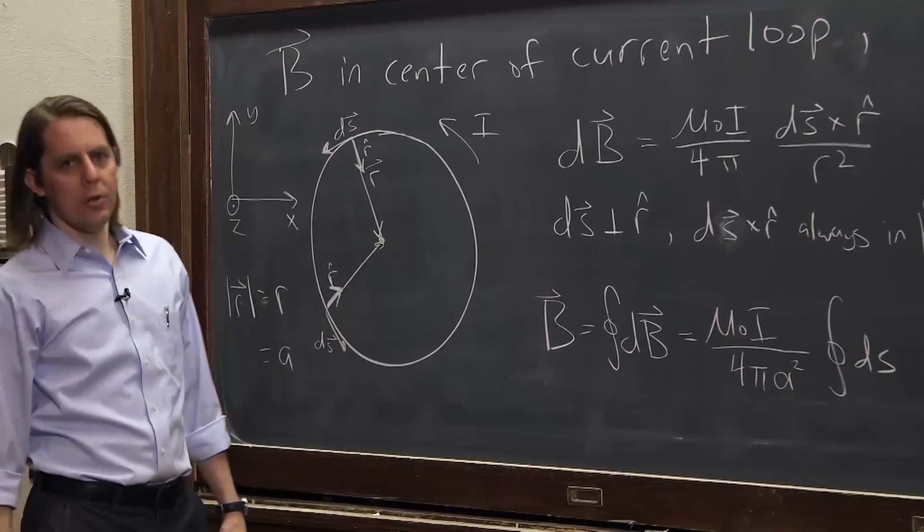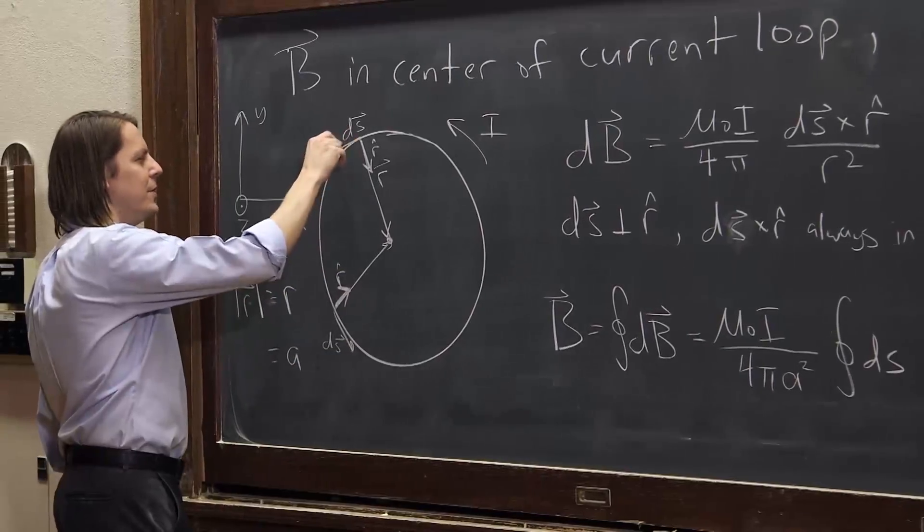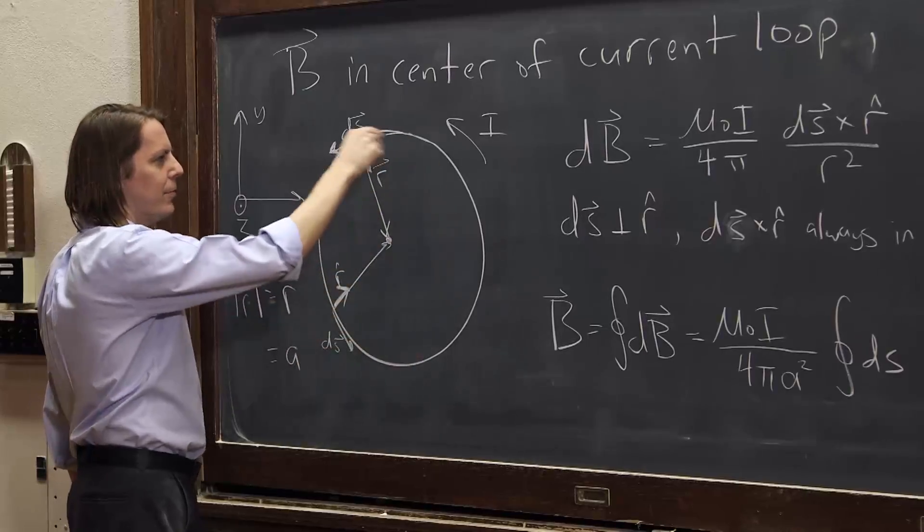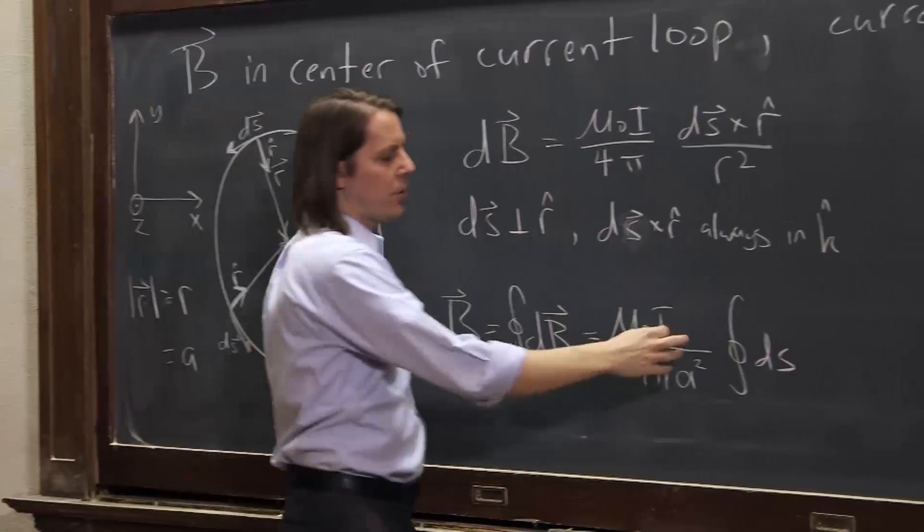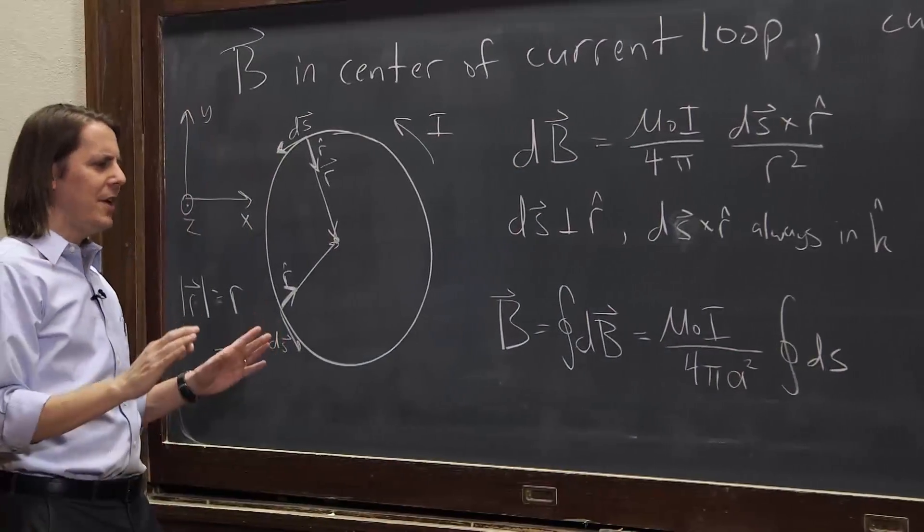So if you are familiar at all with calculus, and maybe a little bit of vector calculus, you know that you integrate this little dS around the circle. That's a length, and it's just the circumference of the circle. That's all it is. So when you see that, you can just call it 2π times a.